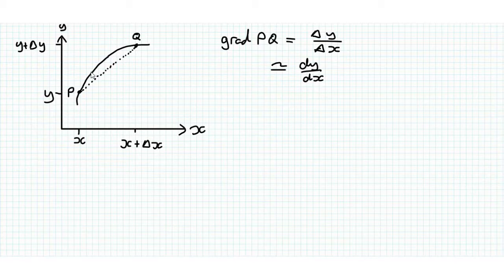When delta x is smaller and smaller, say here, then our chord is essentially the same gradient as the tangent to the line at this point. And the tangent to the line at the point is dy by dx.